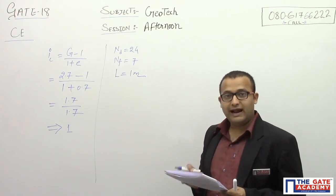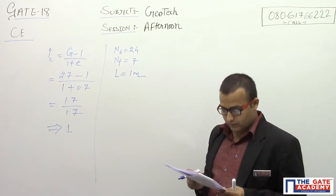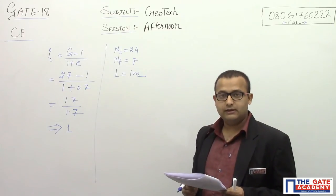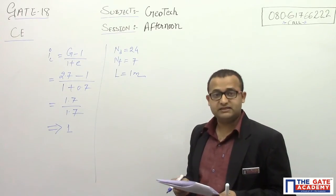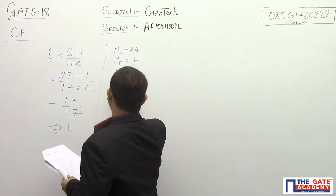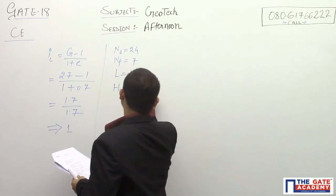The total head loss or the difference in water levels upstream and downstream is given as 6 meters. So as a head loss I can write capital H equals 6 meters.